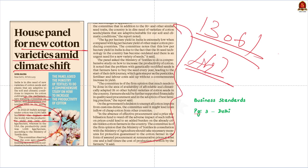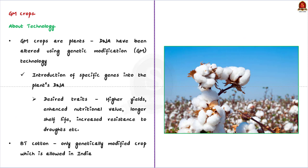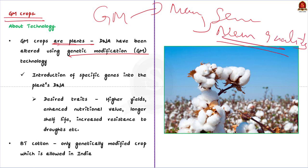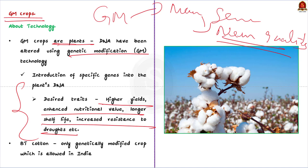In this discussion, we will see about GM varieties of crops from a prelims perspective. GM crops or plants have their DNA altered using genetic modification technology. The technology involves introducing specific genes, often from a different species, into the plant's DNA to confer desirable characteristics. The main purpose is to produce plants with desired traits like higher yield, enhanced nutritional values, longer shelf life, and increased resistance to drought. BT cotton is the only genetically modified crop currently allowed in India.